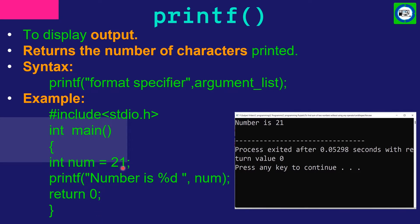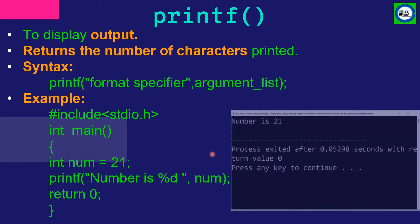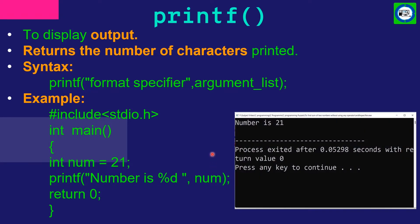Let's take an example. We have taken variable integer num equal to 21, and this variable num is passed as an argument in the printf function. In printf, we have written in double quotation 'number is %d'. Here %d is the format specifier and num is the argument. The output of this program is 'number is 21'.